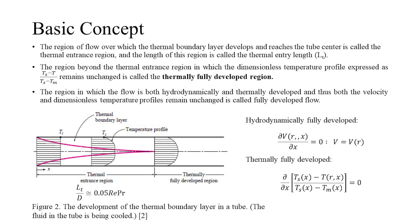Similar to the concept of hydrodynamically developed flow, there is the concept of thermally developed flow. It is characterized by the flow occurring after the fluid passes the thermal entry length. The thermal entry length is approximately equal to the product of the diameter of the pipe, Reynolds number, and the Prandtl number of the fluid divided by 20. A thermally fully developed flow is identified when the non-dimensionalized temperature profile remains unchanged. In our case of convective heat transfer through a pipe, the flow will be referred to as fully developed only when both the hydrodynamic and thermal regions of the flow are fully developed.